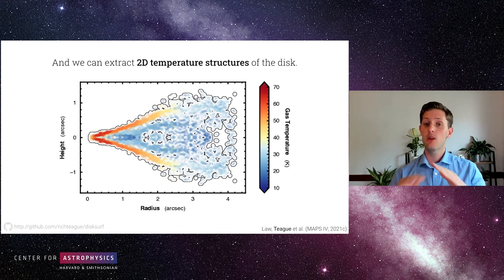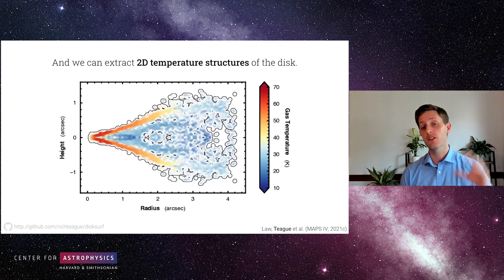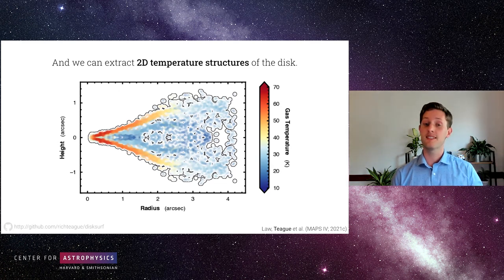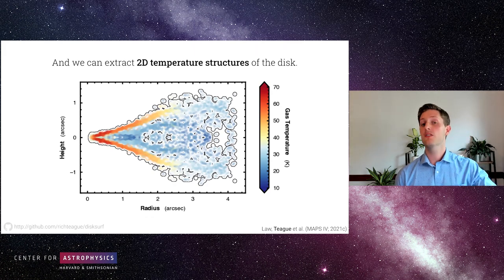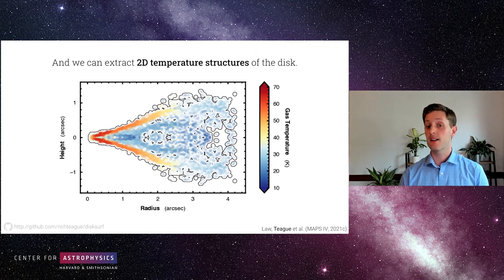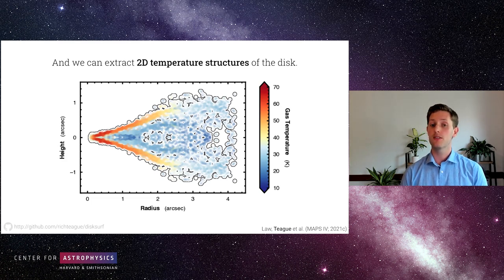What's also particularly interesting is that when we use optically thick emission to do these emission surface extractions, the intensity tells us something about the temperature of the gas too. Not only can we map the surface the emission is coming from, but we can fill in 2D temperature structures of these disks — a really huge step forward in underpinning the simulations we've been running. You can see an incredibly hot atmosphere, with gas temperatures decreasing as you go to the mid-plane, because these disks are externally irradiated by their central star and become more shielded as you move toward the mid-plane. This is a nice direct confirmation of all those theoretical models we've been using over the last several decades.